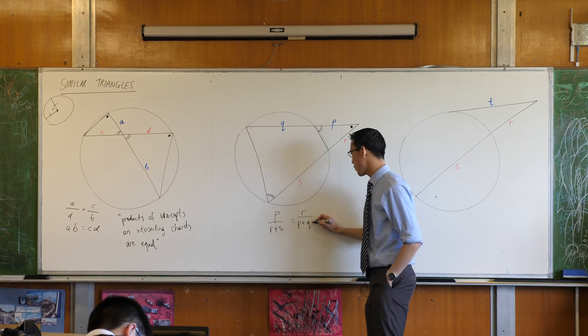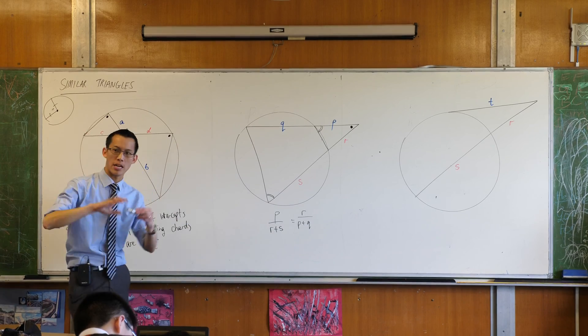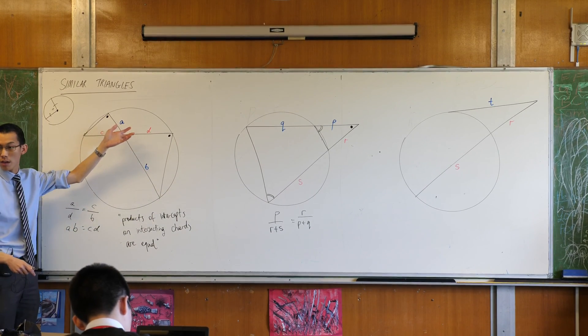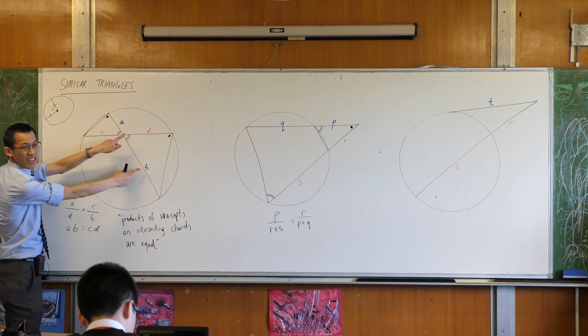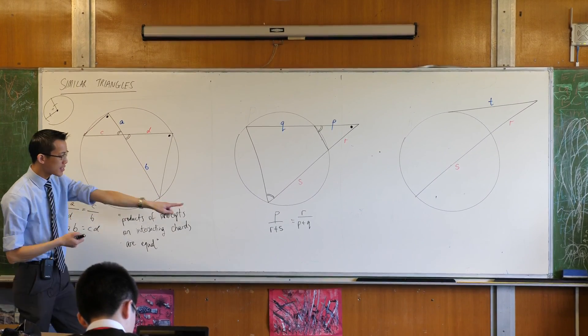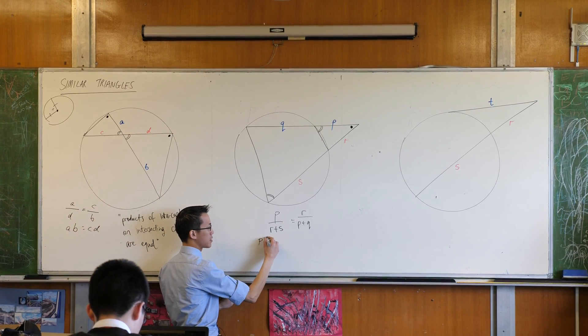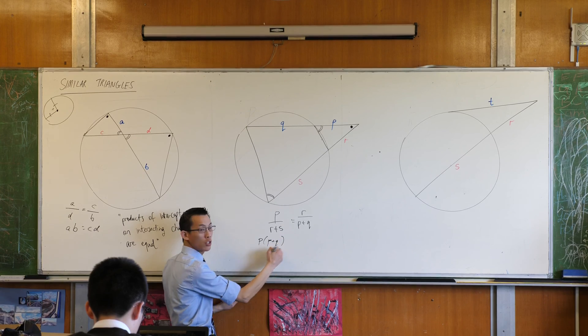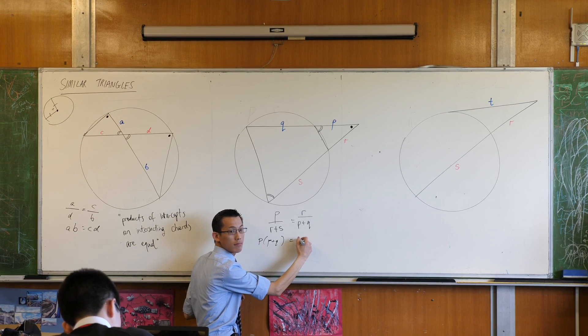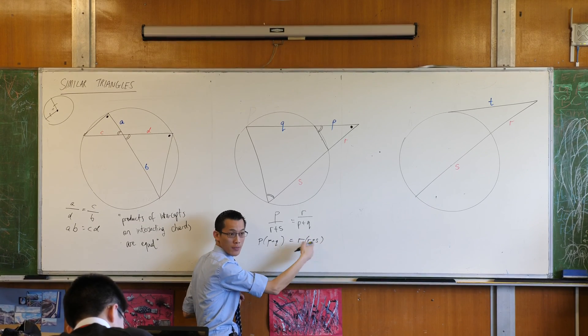Now what this sort of reveals kind of handily is that there's more than one kind of intercept, right? For example, A and B are intercepts on this chord, but A plus B is also an intercept, it's just a bigger one, okay? So in this case here, when I cross multiply, have a look at what we get, we get this, P, P plus Q, there's a product, you see that? And then here you've got R, R plus S. There's another pair of intercepts, right?